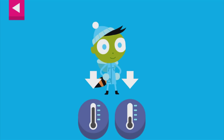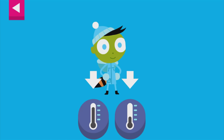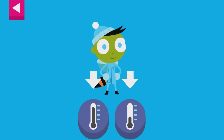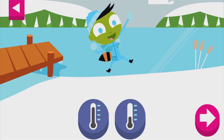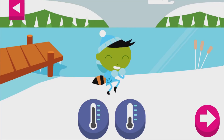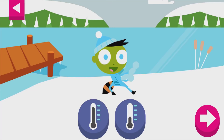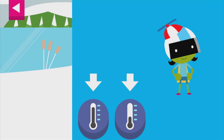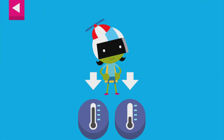Del is dressed for the cold. Tap a thermometer that shows that it is cold. D is dressed for a warm day. Tap the thermometer that shows it is warm.